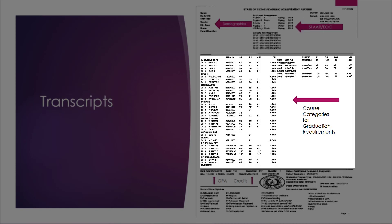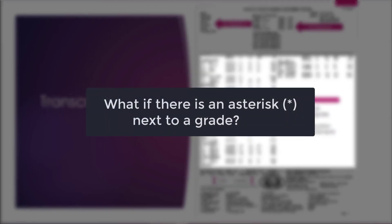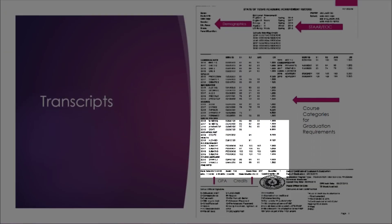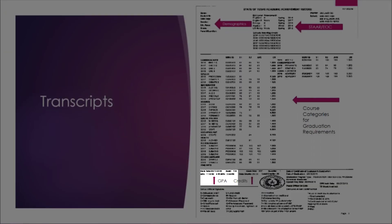Course Categories organizes the courses that you have taken by category. If there is an asterisk next to a grade, it means that credit was lost due to attendance. GPA is where you can find your current 5-point GPA, which is weighted, and your current 4-point GPA, which is not weighted.